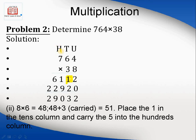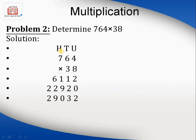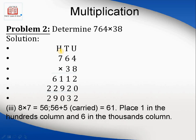When 8 is multiplied by 7, that's 56. 56 plus 5 that is carried is 61. Place the 1 in the hundreds column and 6 in the thousands column. It becomes 6112.